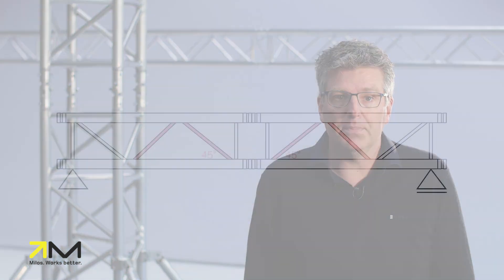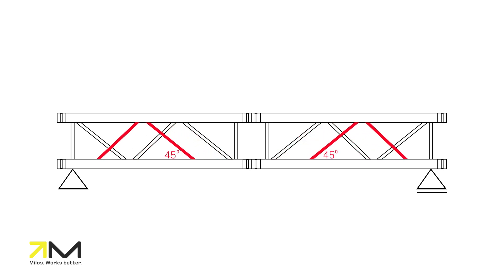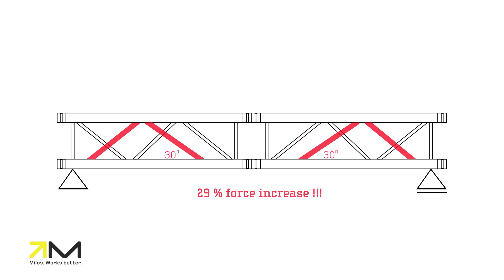If the angle of diagonal changes, the tension in the diagonal also changes. A steeper diagonal will get less load, a shallower one will get more load. For example, going from 45 degrees to 30 degrees angle causes an increase of 29% in normal force of the diagonal.